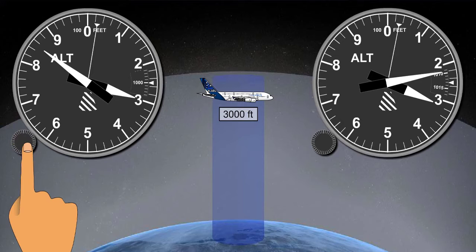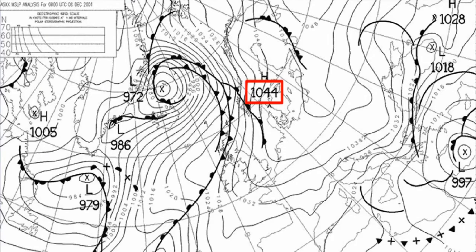Why should the datum pressure that we set on the altimeter subscale ever become incorrect? The simple answer is that the local surface pressure is constantly changing. On this chart the local surface pressure ranges from a high pressure of 1044 to a lowest pressure of 972, and pressures will be constantly changing throughout the day. A change in pressure of even one hectopascal equates to approximately 27 feet at mean sea level in international standard atmospheric conditions. So if our altimeter subscale is not reset accordingly there will be a barometric error.